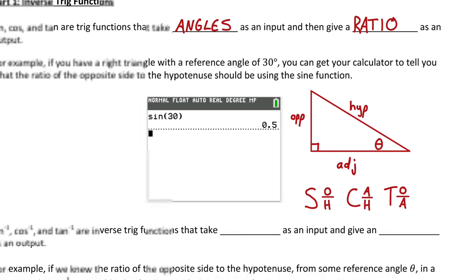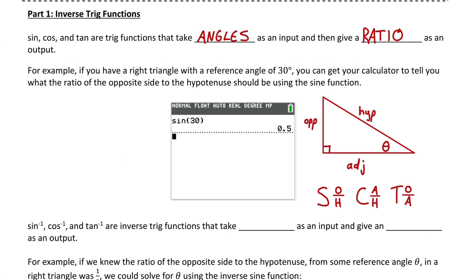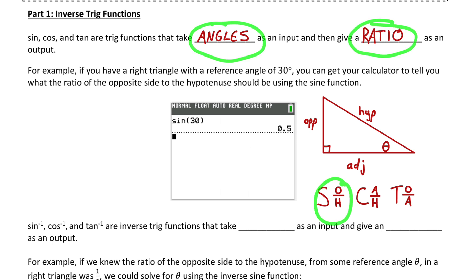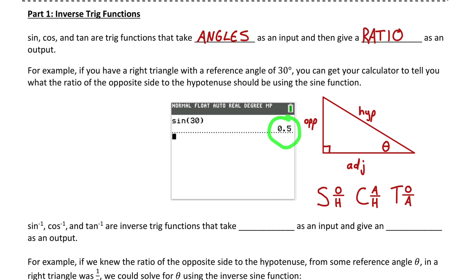After that quick review of SOHCAHTOA, let's move on. For example, if you have a right triangle with a reference angle of 30 degrees, you can get your calculator to tell you the ratio of the opposite side to the hypotenuse using the sine function. If you type sine of 30 on your calculator, making sure you're in degree mode, it assumes the input is an angle and outputs the ratio of sides — opposite over hypotenuse. The calculator says the ratio is 0.5.